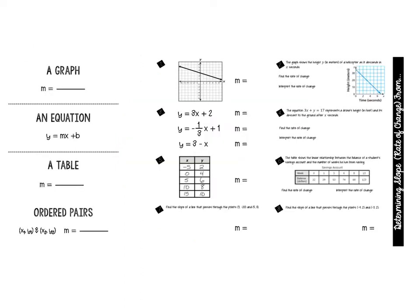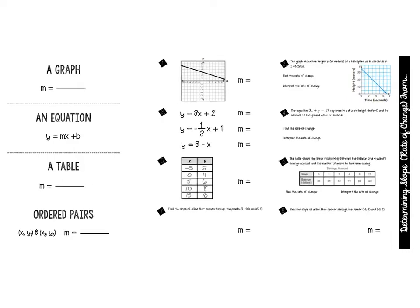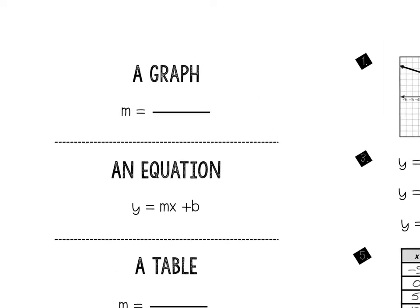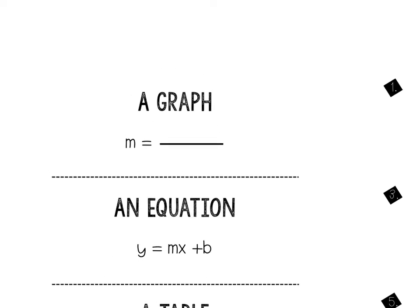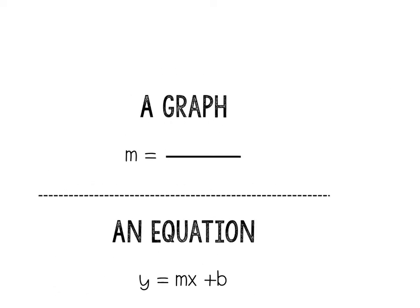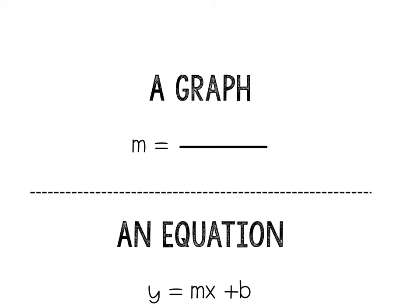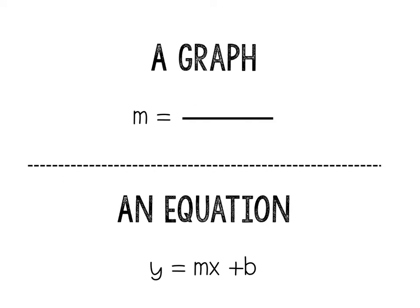Now what we have to do today is calculate our slope. Back on the actual notes that we'll glue in on the next page — now that you have slope guy written down — we're going to take three sections. When you fold it you have a graph, you have an equation, and you have a table slash ordered pairs. We're going to do each of these three sections one at a time, so there's a little bit of flipping going on today. Stay with me — we're going to start with a graph.